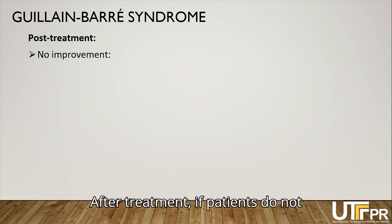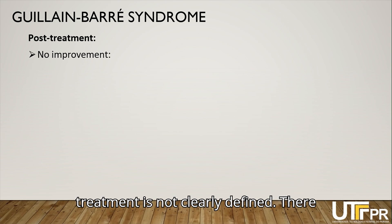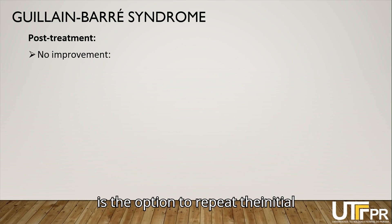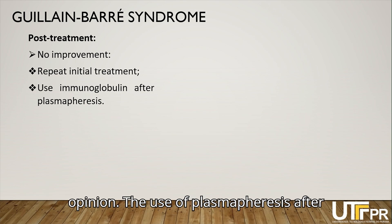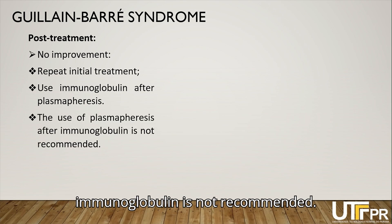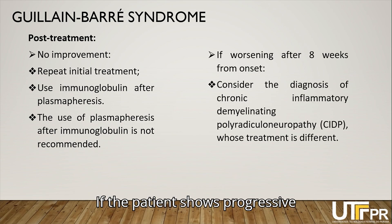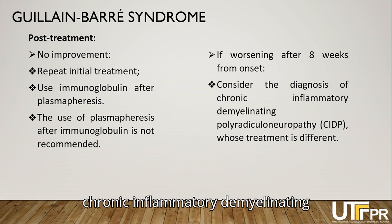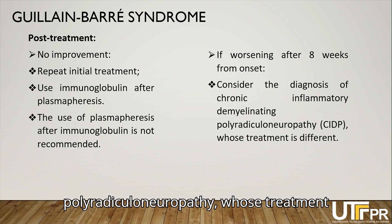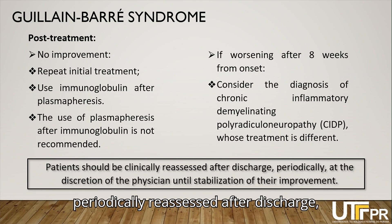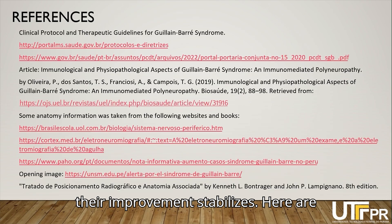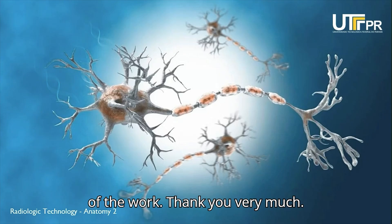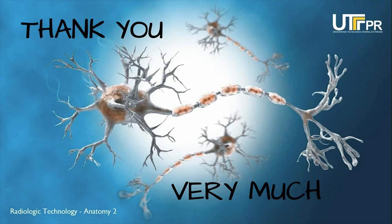After treatment, if patients do not improve or even worsen, a new treatment is not clearly defined. The option exists to repeat the initial treatment or use immunoglobulin after plasmapheresis, based on expert opinion. The use of plasmapheresis after immunoglobulin is not recommended. If the patient shows progressive worsening beyond eight weeks after onset, consider the diagnosis of chronic inflammatory demyelinating polyradiculoneuropathy, whose treatment is different. Patients should be periodically reassessed after discharge, at the discretion of the physician, until their improvement stabilizes.